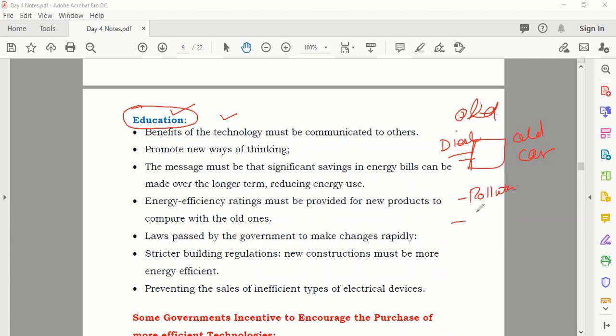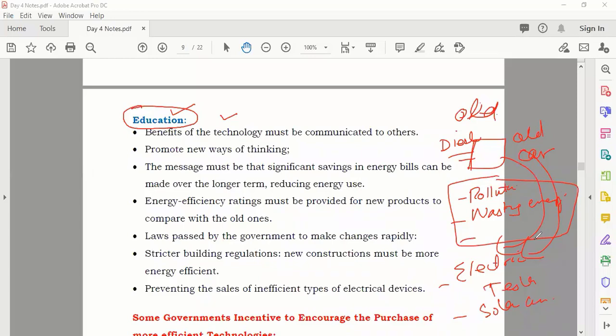That old car working on diesel, it's producing pollution, it's become very old, it's wasting energy. Now you have electric cars like Tesla, you have solar cars. If a person is educated, no need to worry, he can easily shift from old car to new car.